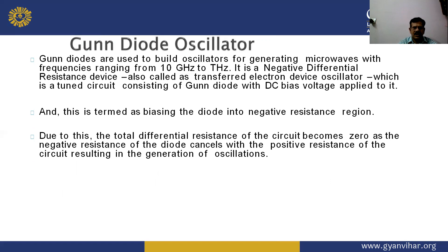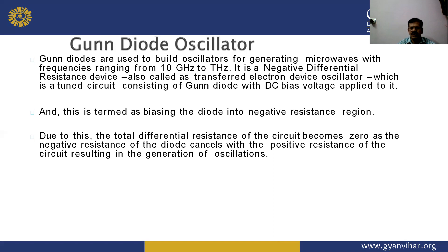In Gunn diode oscillators, Gunn diodes are used to build oscillators generating microwave power with a frequency range from 10 GHz to terahertz. They are also called Transfer Electron Device (TED) oscillators, consisting of a Gunn diode with DC bias voltage applied, biasing the diode into the negative resistance region. As a result, the total differential resistance of the circuit becomes zero as the negative resistance of the diode cancels the positive resistance of the circuit, resulting in oscillations.